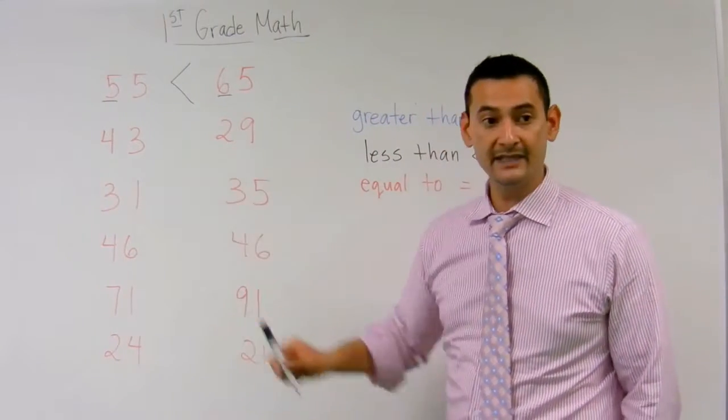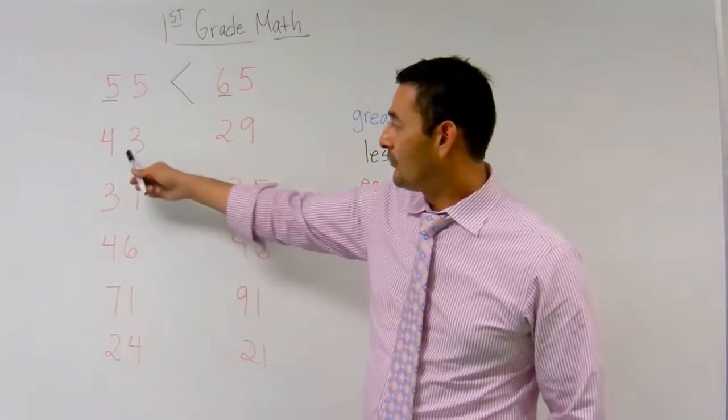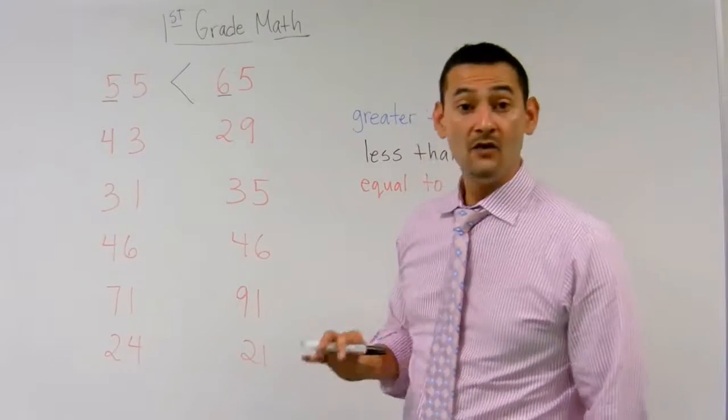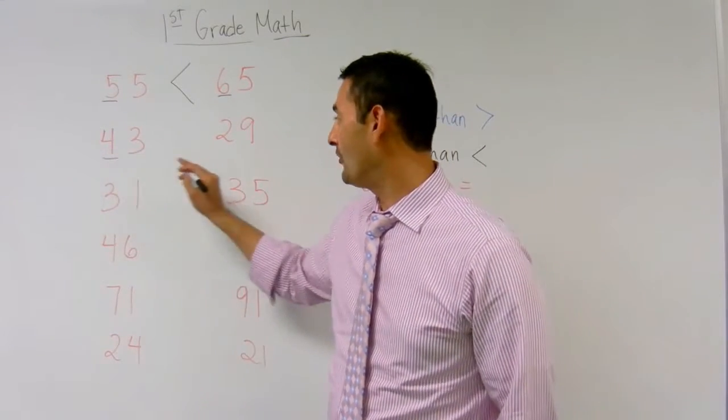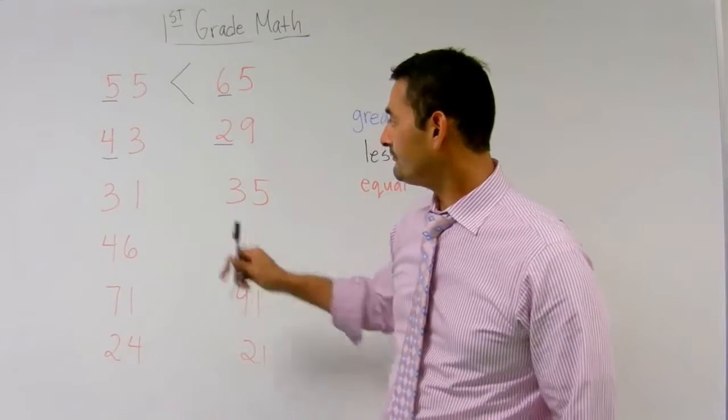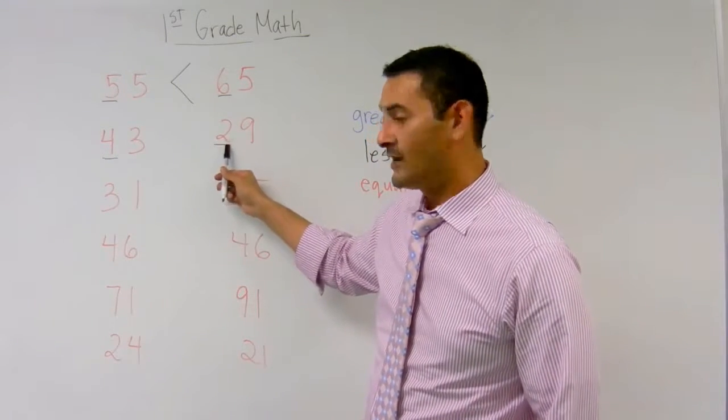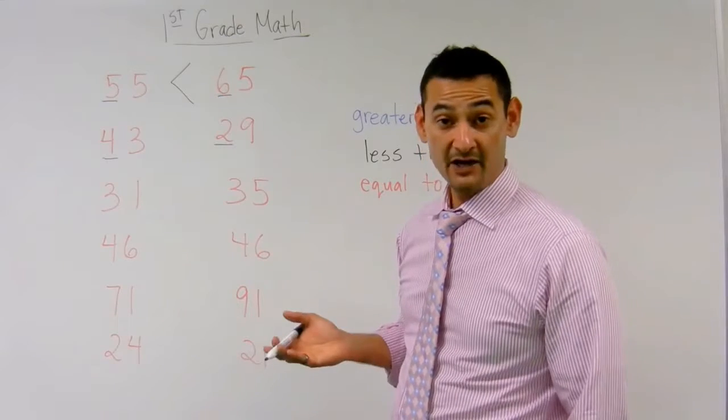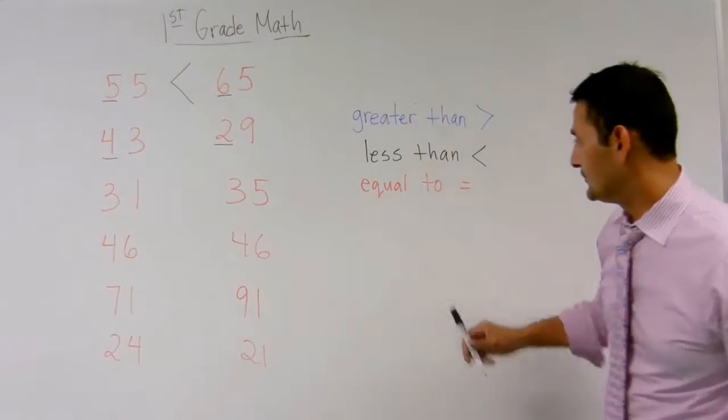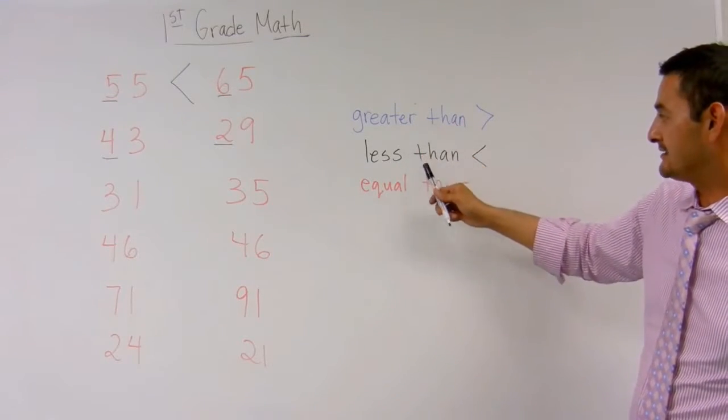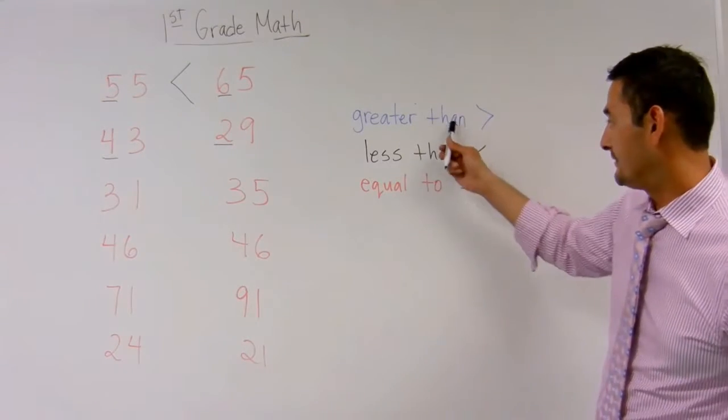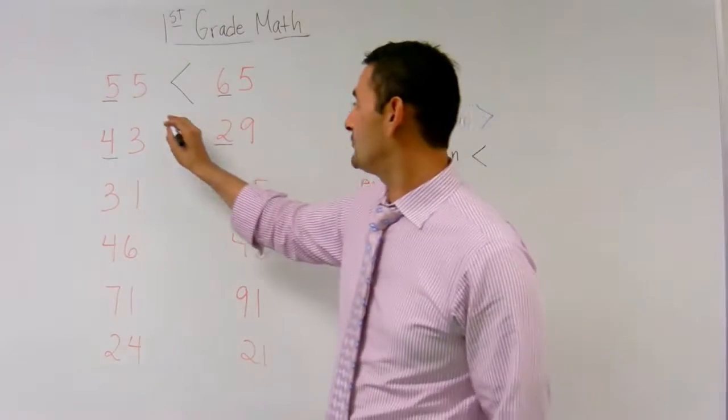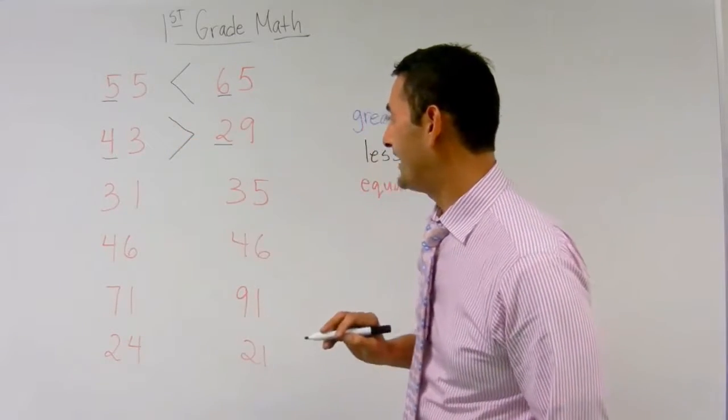Now, let's take a look at these next two numbers. We have 43 and 29. What numbers are we going to compare first? The tenths place. We're going to compare the 4 and the 2. Is the 4 bigger than or smaller than the 2? It's bigger than the 2, right? So, what am I going to use? Greater than, less than, or equal to? That is absolutely correct. I'm going to use greater than. So, I'm going to use the greater than symbol and put it right there.